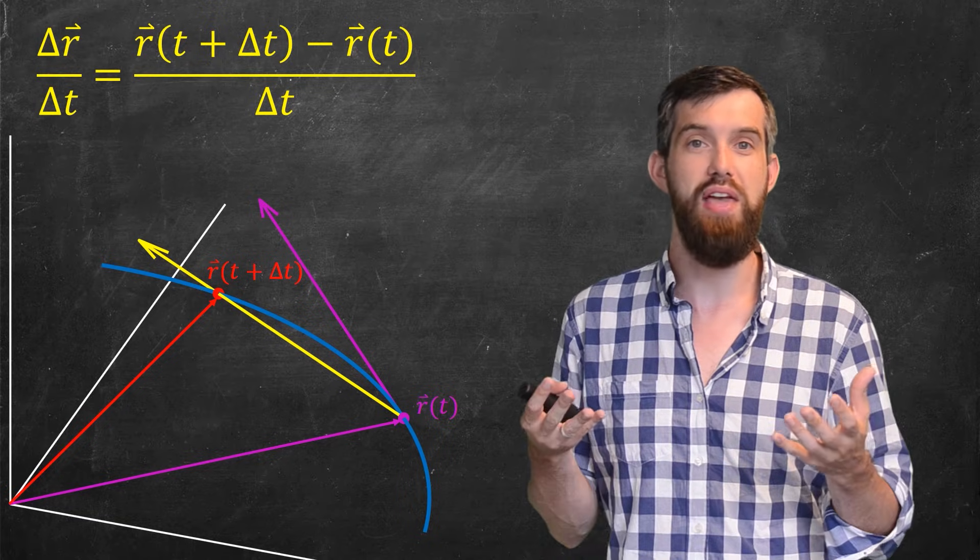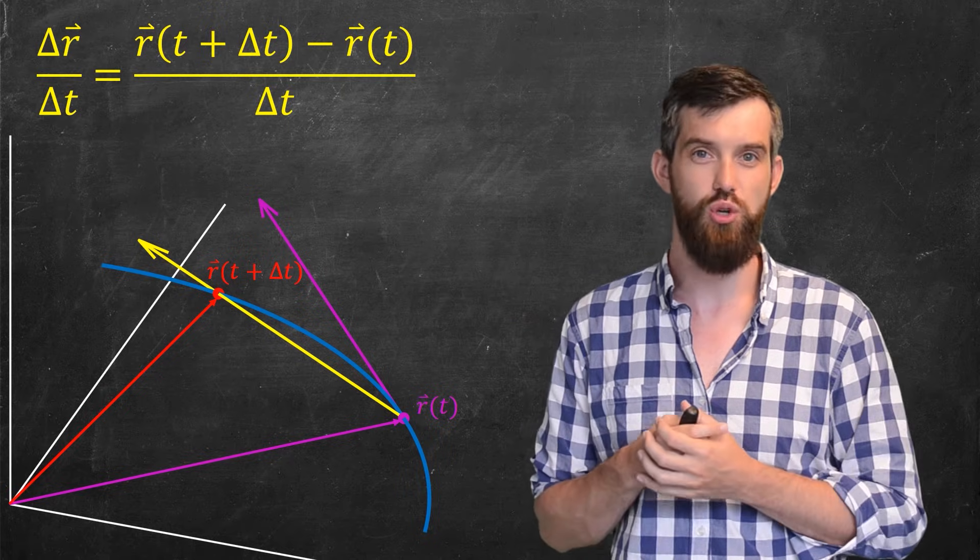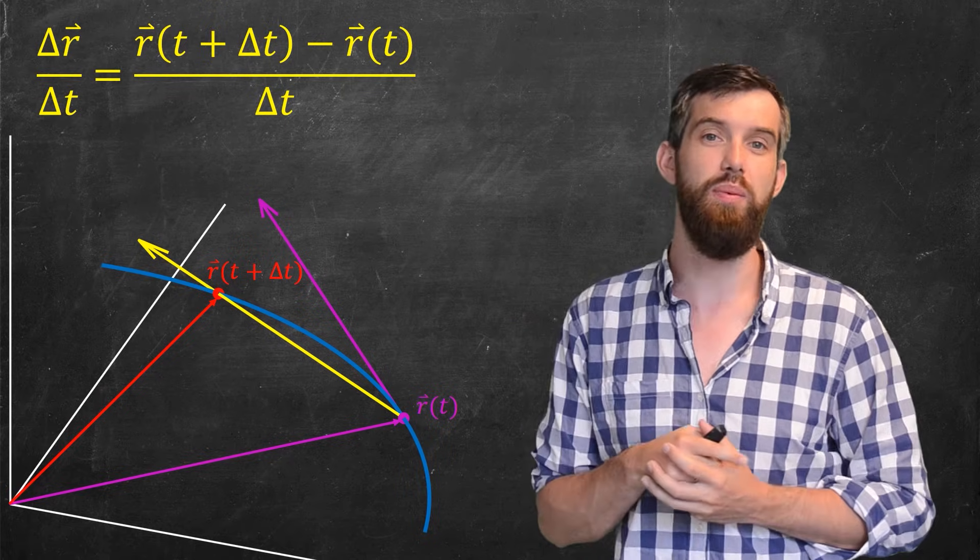So that's a pretty good example of a difference quotient. We have this yellow vector that references our difference quotient, and completely analogous to what we did in single variable calculus.